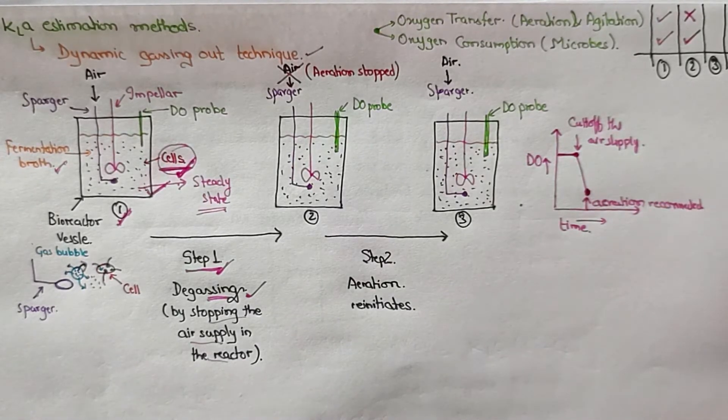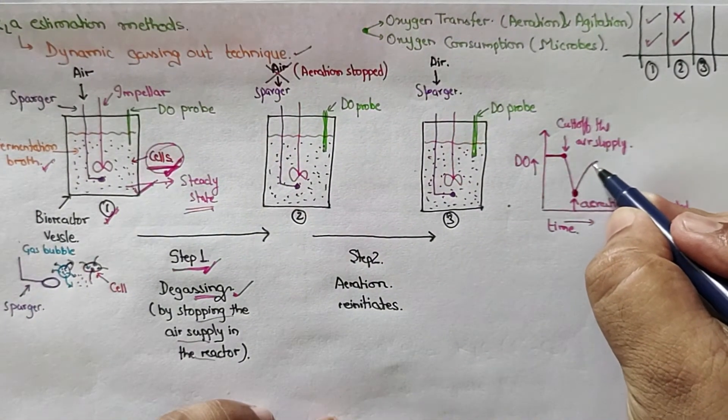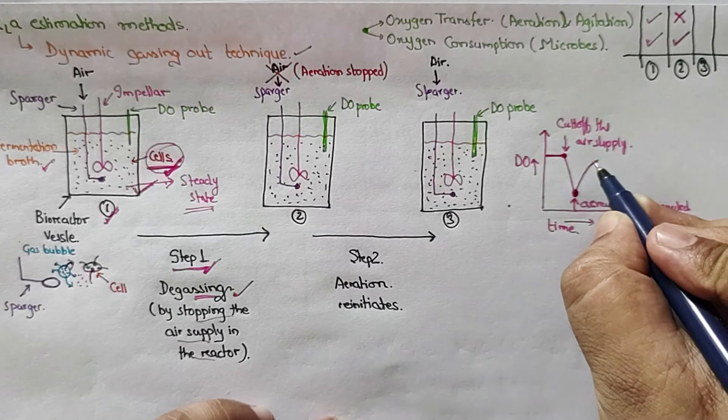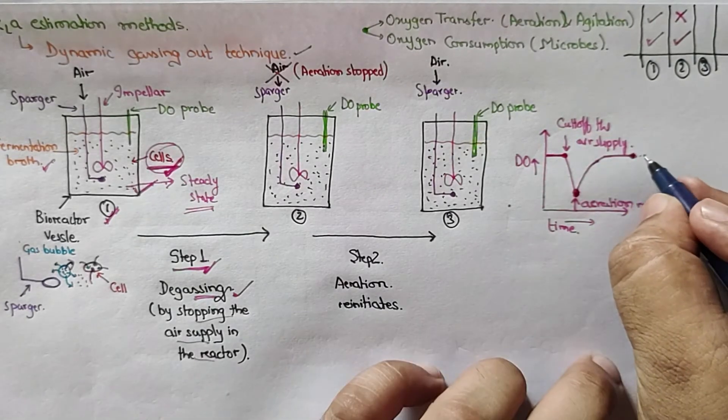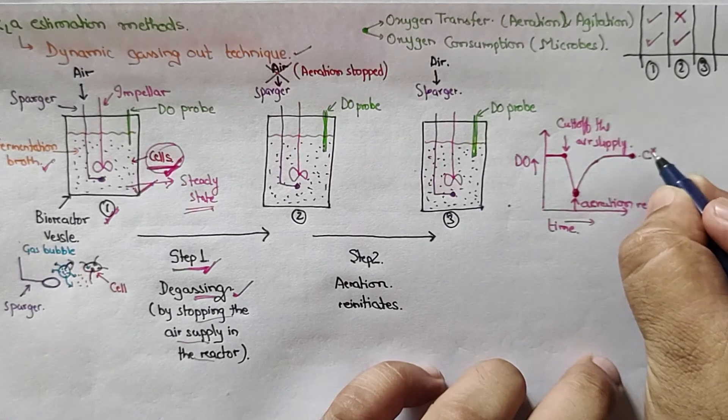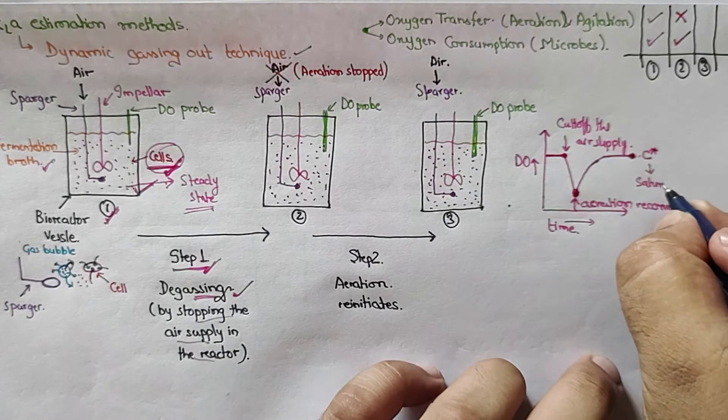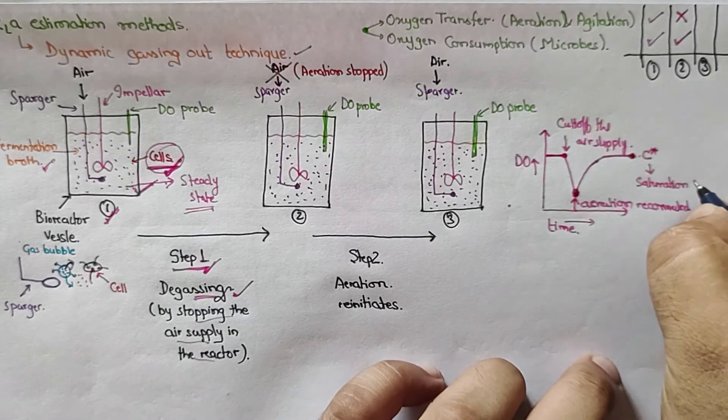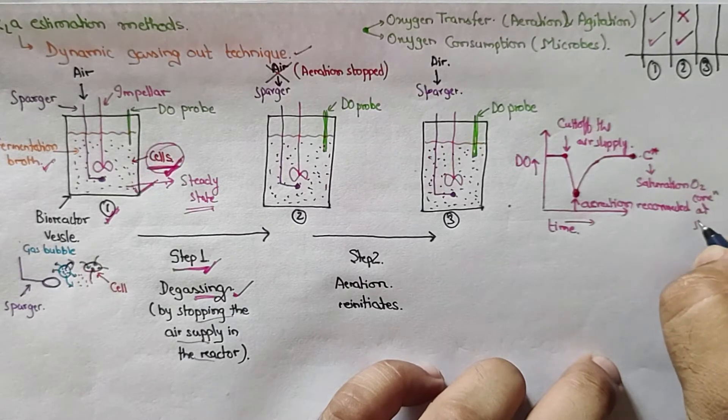Once this is reconnected, what will happen? The DO level will slowly start to rise and reach that same steady state. This is represented by C star. So this is your saturation O2 concentration at steady state.